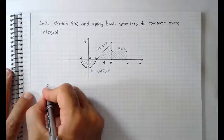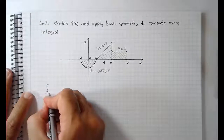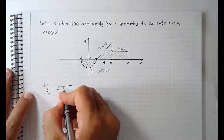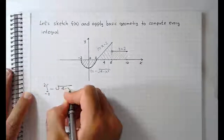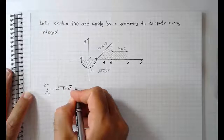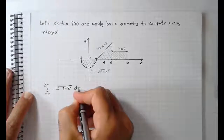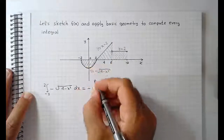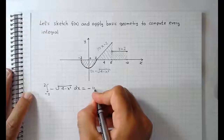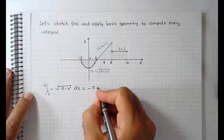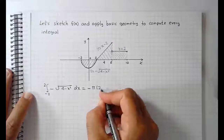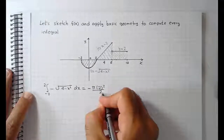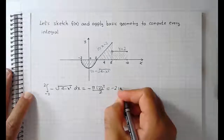The integral from minus 2 to 2 of minus root of 4 minus x squared dx is going to be equal to minus the area of a semicircle, which is pi times radius squared over 2, where the radius is 2. This gives minus 2 pi.